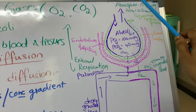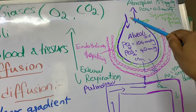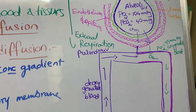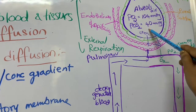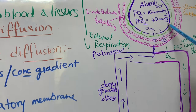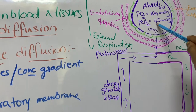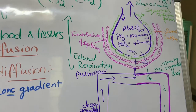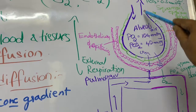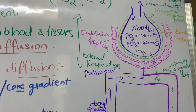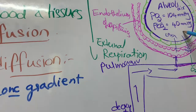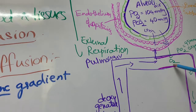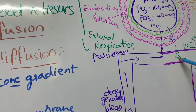Oxygen from the atmosphere enters the alveolar cavity. Simultaneously, carbon dioxide with high partial pressure in the alveolar cavity (40 mm Hg) exits, since the atmospheric pCO₂ is only 0.3 mm Hg. From the alveolar cavity, oxygen then diffuses into the blood of the surrounding capillaries.